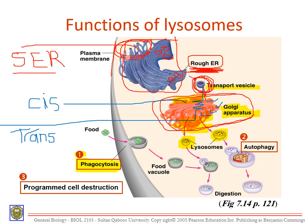The first job of lysosomes is phagocytosis. The second job is autophagy. The third job is programmed cell destruction. Let me explain each one so you understand the functions of lysosomes.